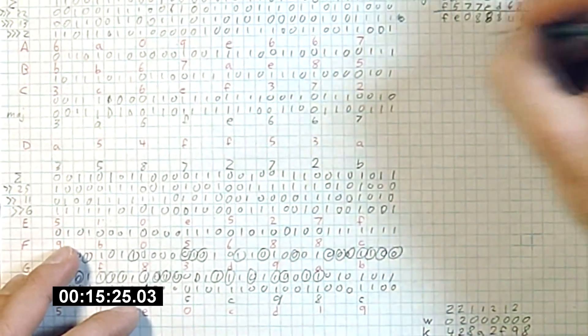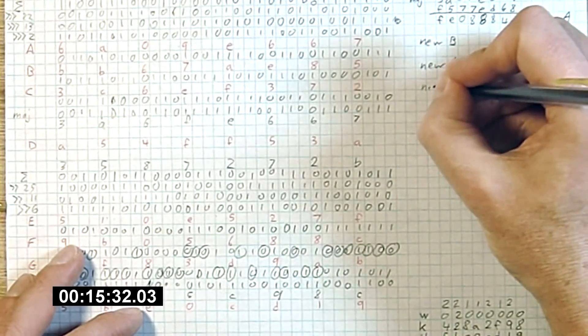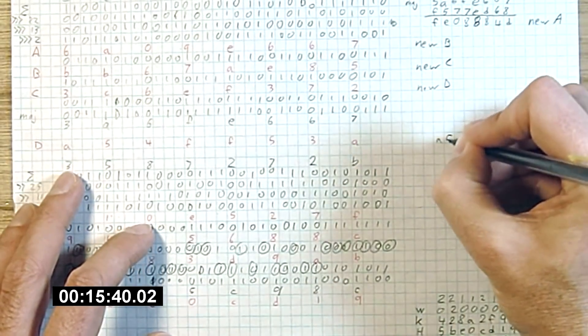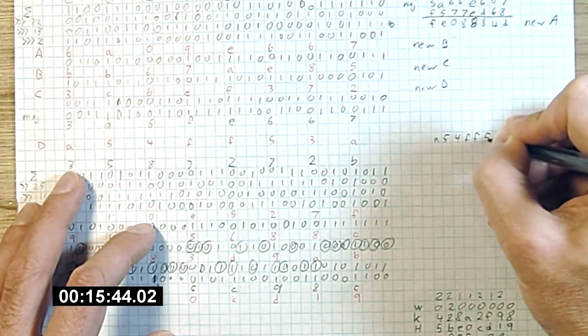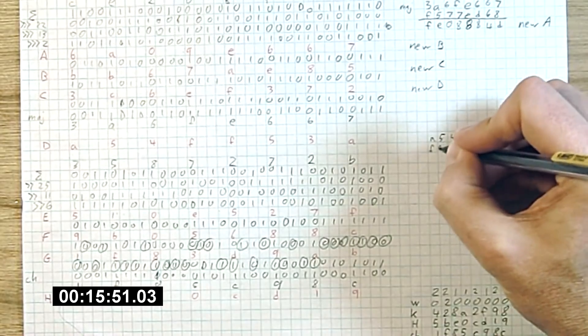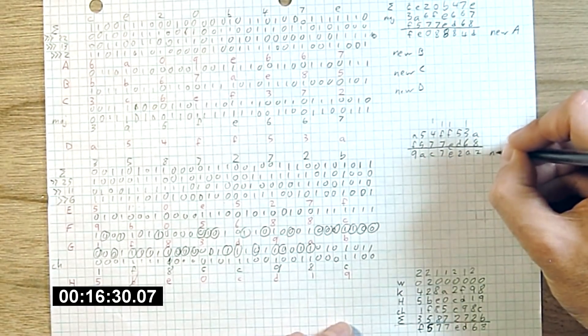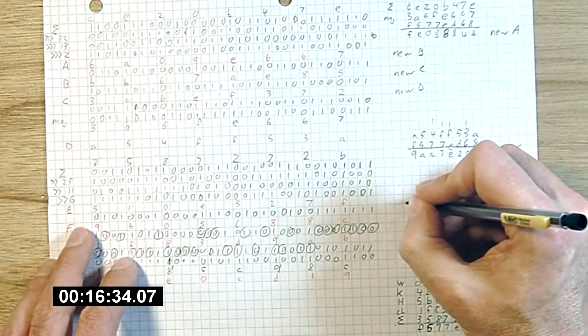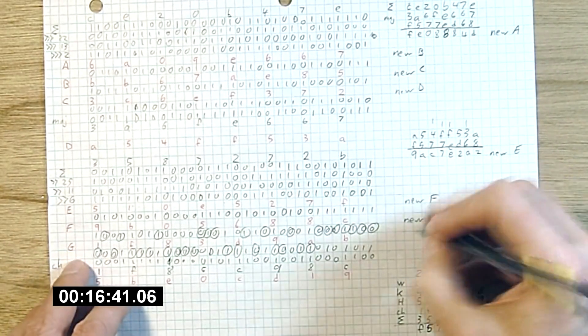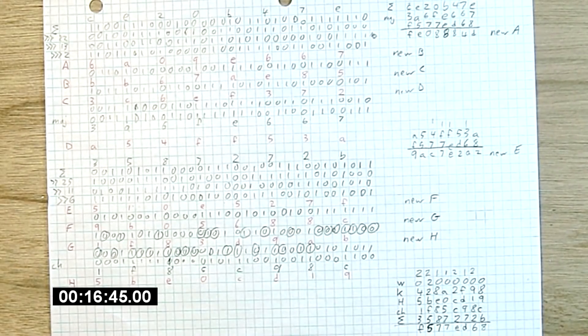Now the new B is simply the old A value. Easy. New C is simply the B value. New D is our old C value. And now to compute our new E value, we're going to take D, which is A, 5, 4, F, F, 5, 3, A. And we're going to add our previous sum, which was F, 5, 7, 8. That's our new E value. And our new F value is our old E. Our new G comes from here. And our old G becomes our new H. So, we have now completed one round of the SHA-256 hashing.